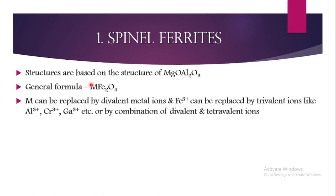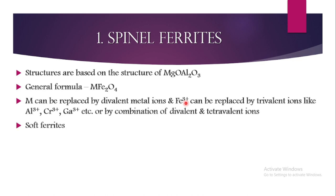The metal M can be replaced by any divalent metal ion, and the Fe³⁺ ion can be replaced by any trivalent ion such as aluminium, chromium, or gallium — or even by a combination of divalent and tetravalent ions, as long as charge balancing is maintained. A further speciality is that spinels are soft ferrites, meaning they have lower coercivity. We will study this in more detail in later classes.